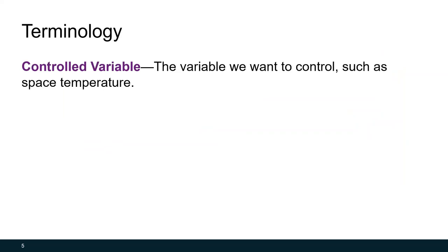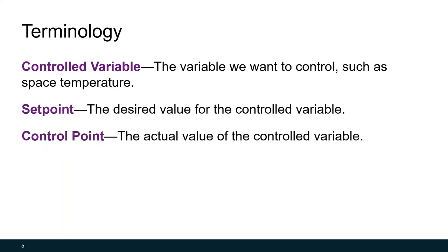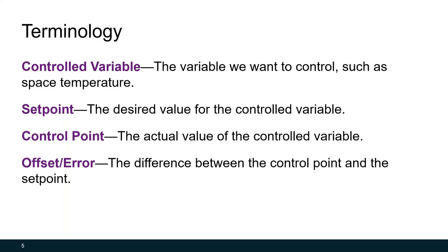Throughout this video we'll be using some terminology that is important to understand. The first term is the controlled variable — the variable we want to control. An example is a home thermostat where we're trying to control space temperature. What we set our thermostat to is called the set point, which is the desired value for the controlled variable. What the temperature in your house actually is is the control point — the actual value of the controlled variable at a given time. The difference between the two is called the offset or the error; they are interchangeable terms.